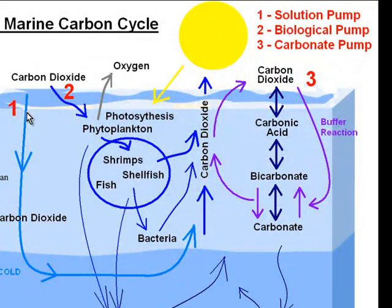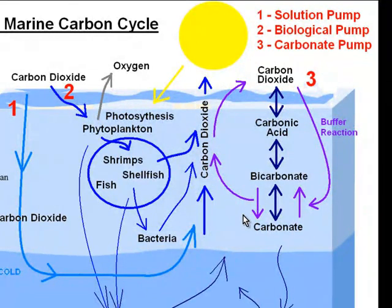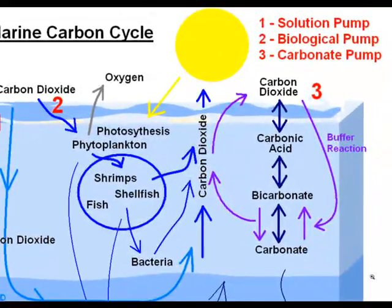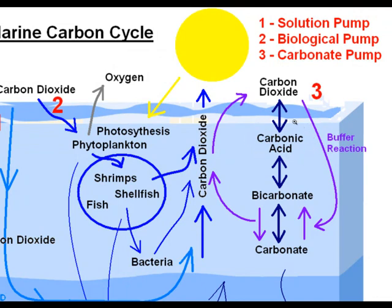The solution pump you can almost think of as a physical pump, and the biological pump is to do with biology. But the carbonate pump is a chemical reaction which goes on in the sea. The carbon dioxide can enter the ocean and then some of it can turn into carbonic acid. Carbonic acid is a very weak acid. From carbonic acid, because it's an acid, it can lose a hydrogen ion and become a bicarbonate ion. And then from a bicarbonate ion, it can lose another hydrogen ion to become a carbonate ion.